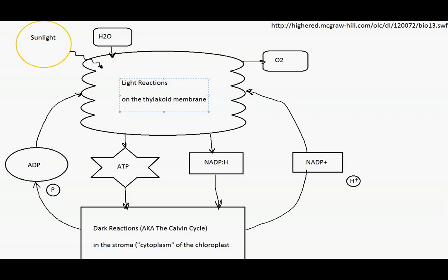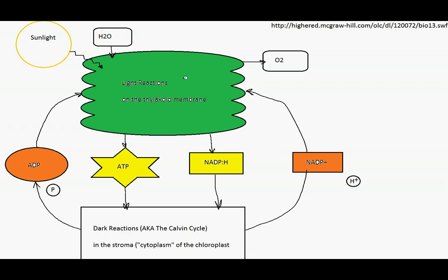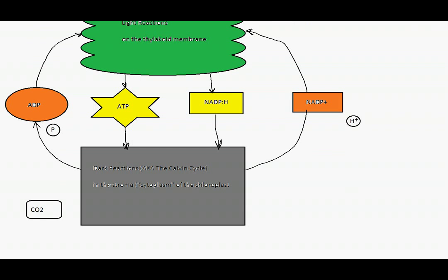Starting with the light reactions making things for the dark reactions. Those things are ATP and NADPH getting recycled back. Our NADP plus and ADP. Light reactions using light and using those chlorophylls. So I'll color them green. Dark reactions, no light.